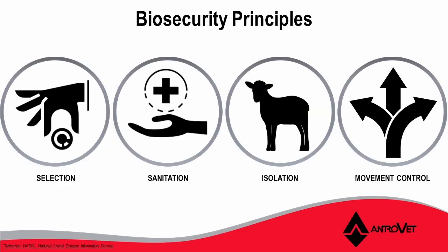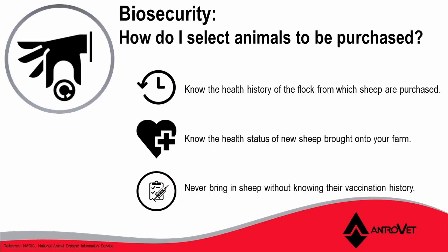Today we're going to look at these four biosecurity principles: selection, sanitation, isolation, and movement control on the farm. This will relate to the selection of your flock, not related to genetics, but related to biosecurity principles. Remember, these guidelines are specifically related to biosecurity and not other performance factors like genetics. So how do we select animals to be purchased?